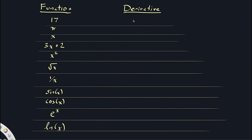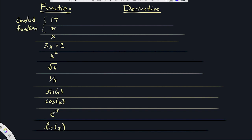For the first two functions, 17 and pi — these are both constant functions. They don't really look like functions at all. Their graphs are just horizontal lines. This is a horizontal line at y equals 17, and this is a horizontal line at y equals pi. In either case, horizontal lines have zero slope — they're completely flat. Therefore the derivative, in both cases, is zero. The derivative of constant functions is zero.